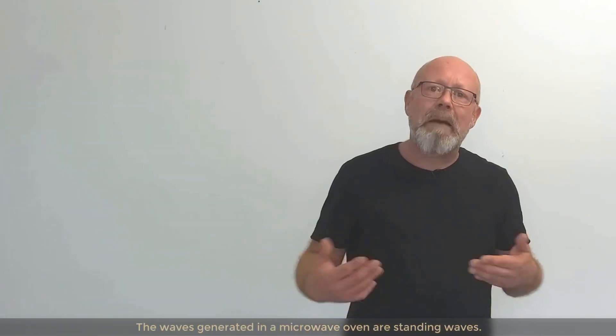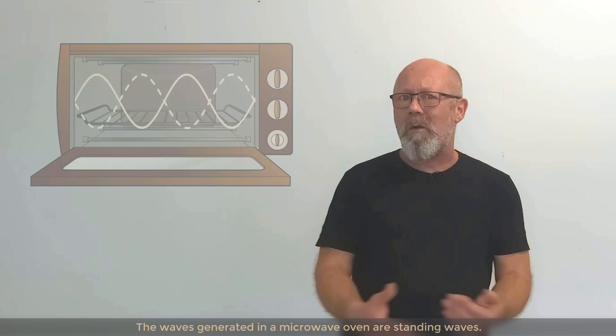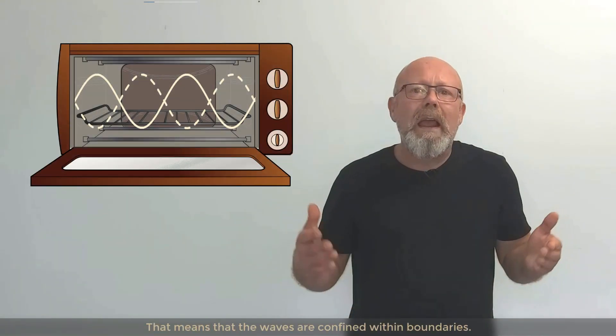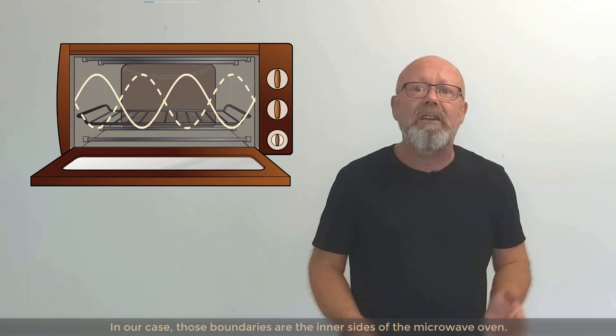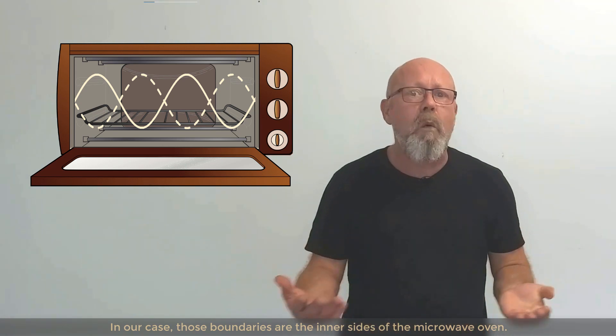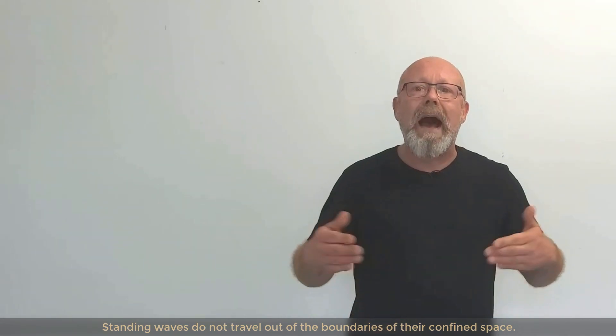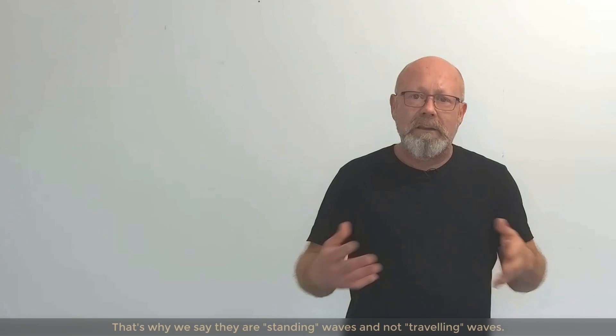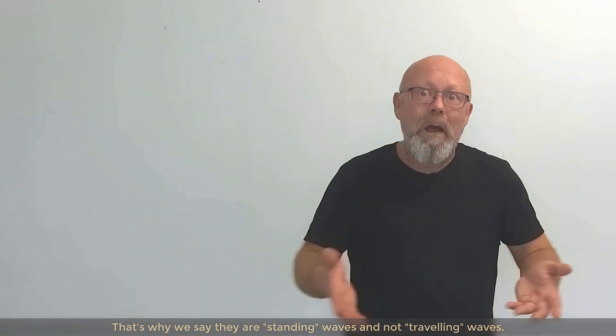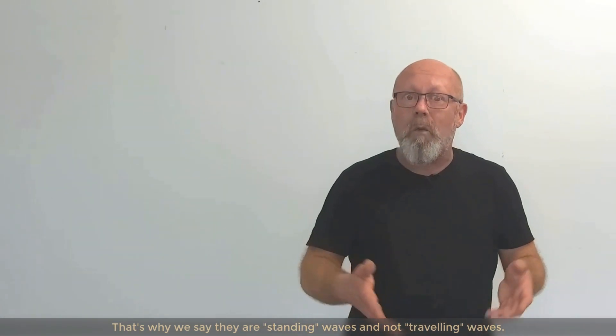The waves generated in a microwave oven are standing waves. That means that the waves are confined by boundaries. In our case, these boundaries are the inner sides of the microwave oven. Standing waves do not travel out of the boundaries of their confined space. That's why we say they are standing waves and not traveling waves.